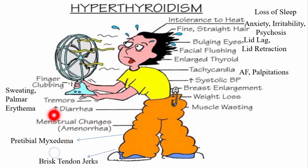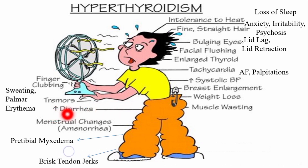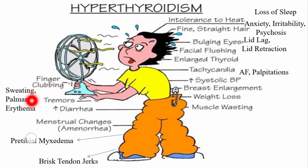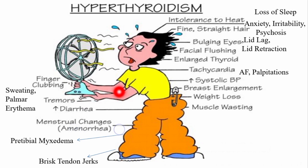Regarding the GIT, there is increased motility, weight loss, and diarrhea. In the hands we may find sweating, palmar erythema, and tremors — tremors of the outstretched hands can be seen.